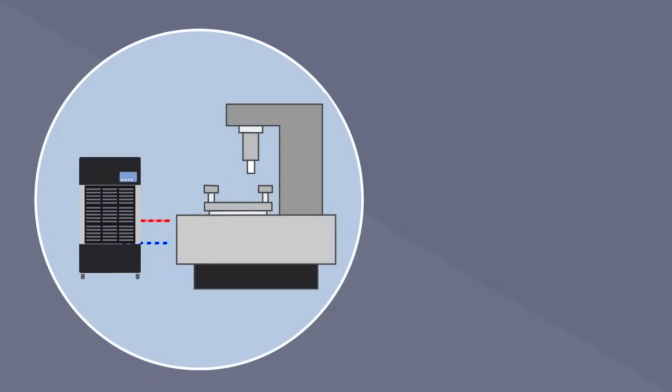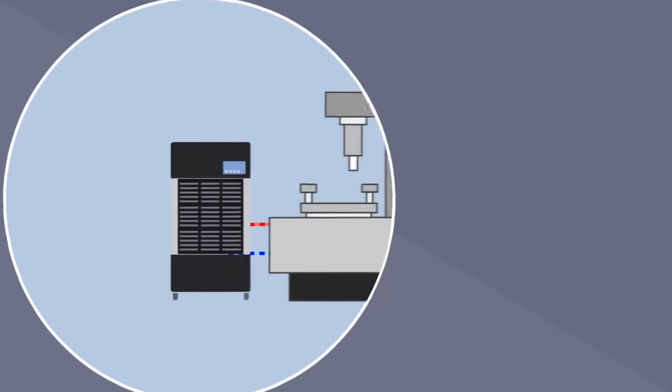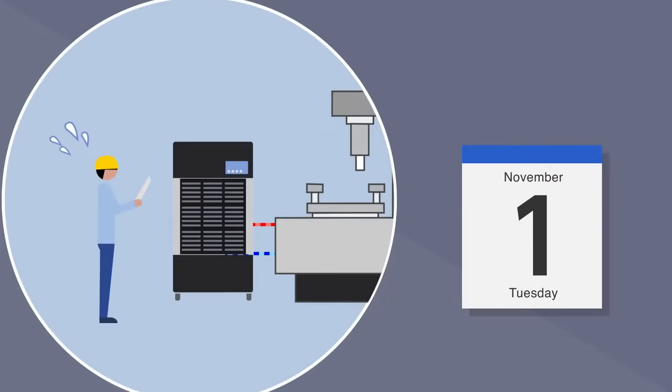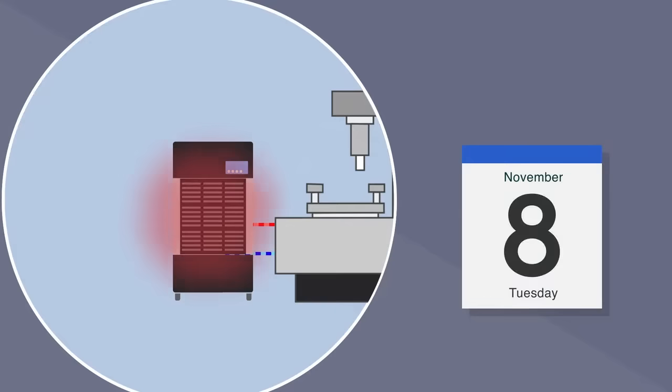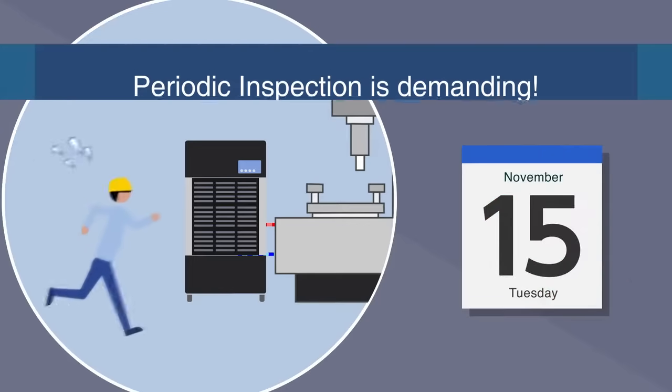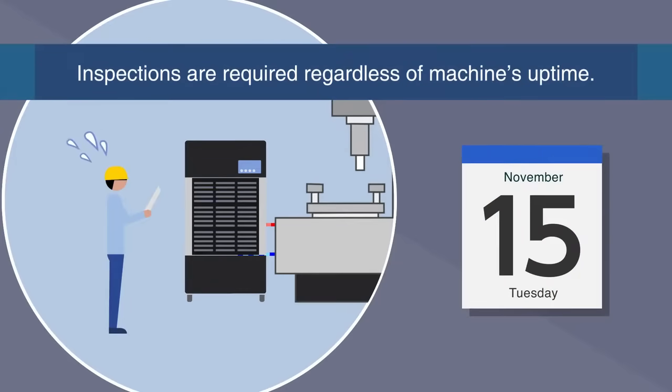Processes like performing periodic inspections or changing the filter on your machine's oil cooling units are essential to keep your machines running at an optimal level. However, these processes can be very demanding. Performing these cumbersome inspections are required to keep the machine running, regardless of its uptime.